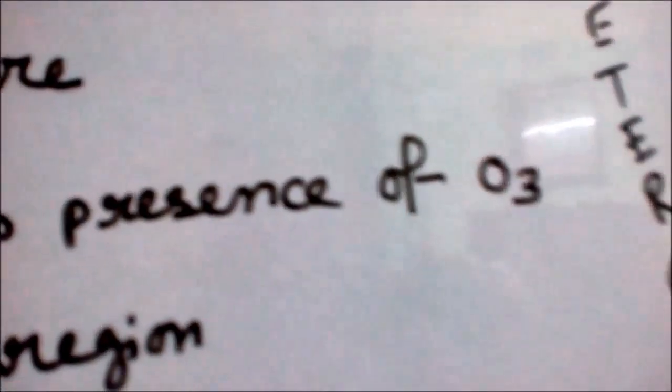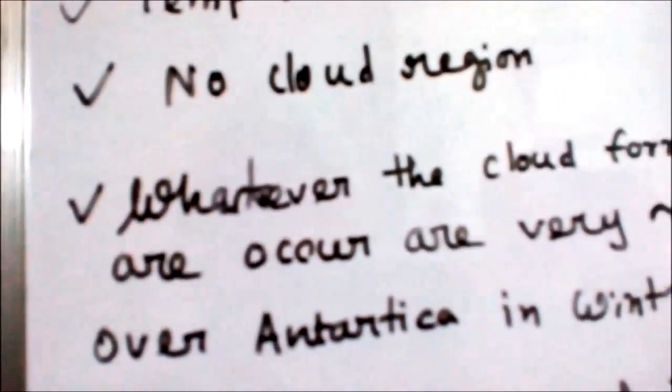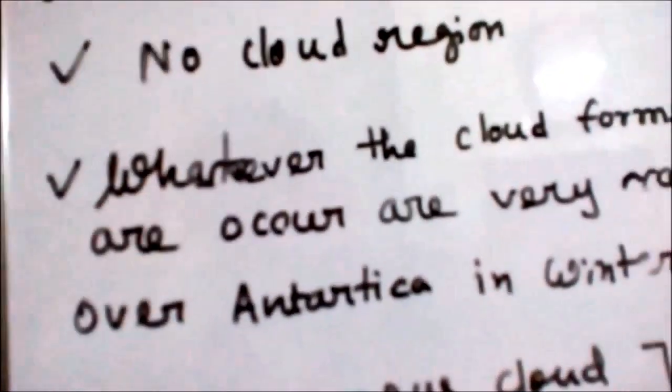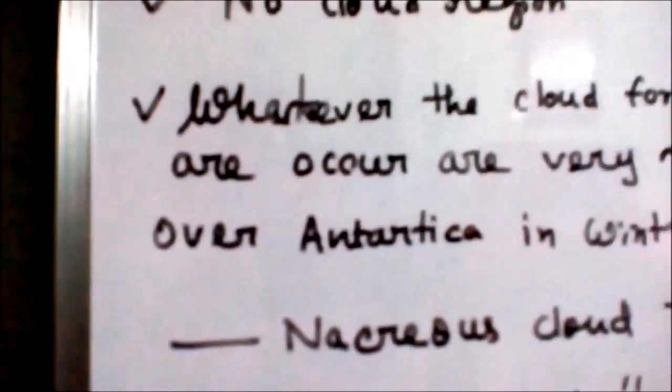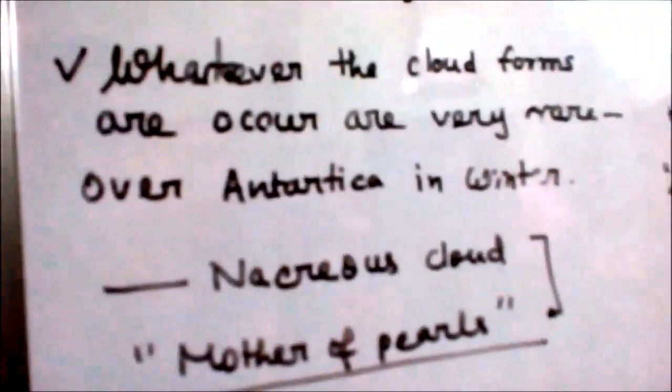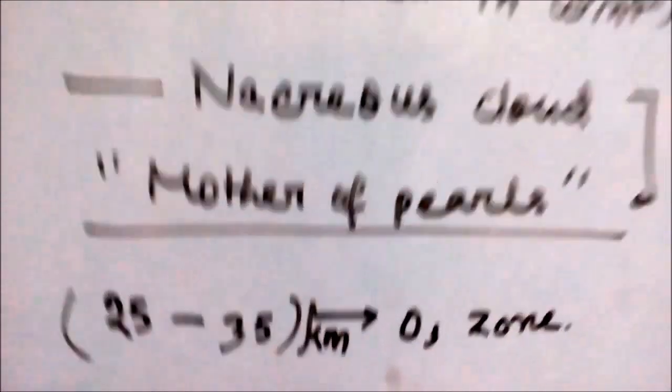The temperature increases here because ozone gas absorbs the ultraviolet rays of the sun and becomes hot. This region is called the no-cloud region — there is no mixing of gases and no turbulence, which is why this zone is preferred by pilot aeroplanes. Whatever clouds do form are very rare and occur over Antarctica in winter; they are called nacreous clouds, or mother-of-pearl clouds for their colouring.